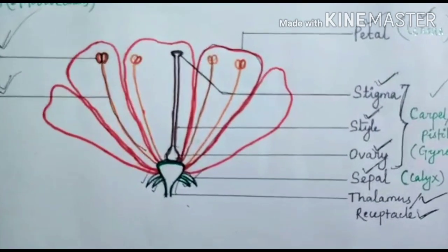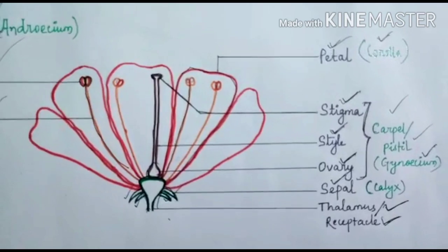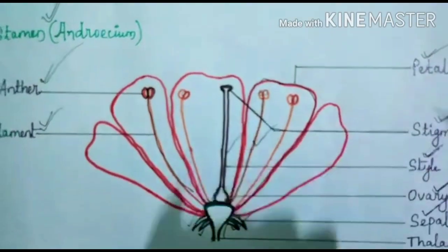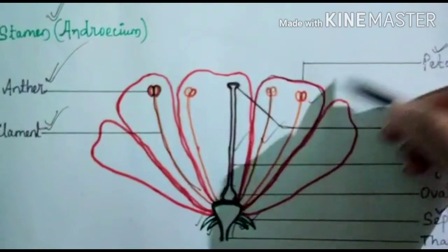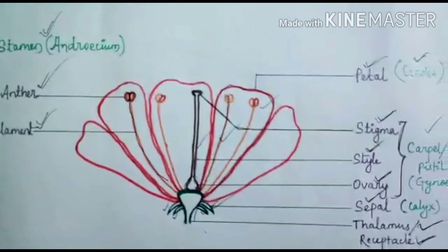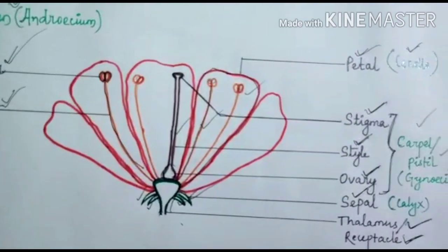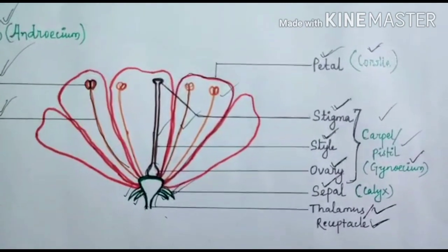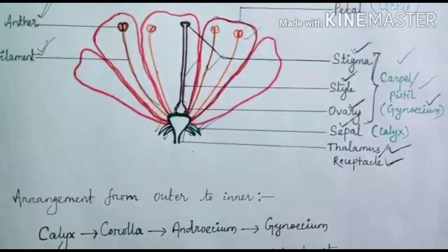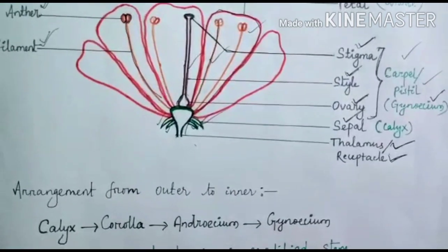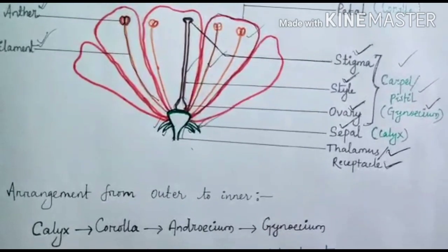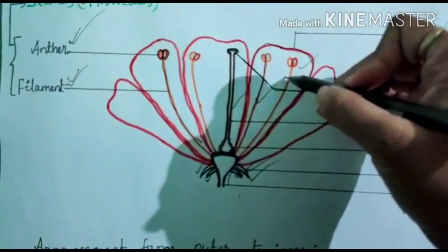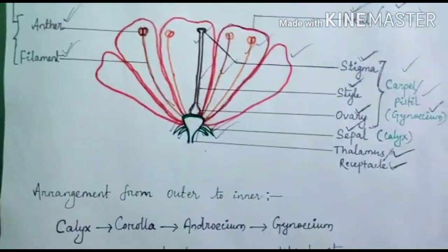So these are all the floral parts which are arranged on a central axis called the thalamus or receptacle. If we see the floral members from inner to outer, we find first is the gynoecium, then the androecium, then the petals forming the corolla, then the sepals forming the calyx. The androecium is called the male reproductive unit and the gynoecium is called the female reproductive unit.